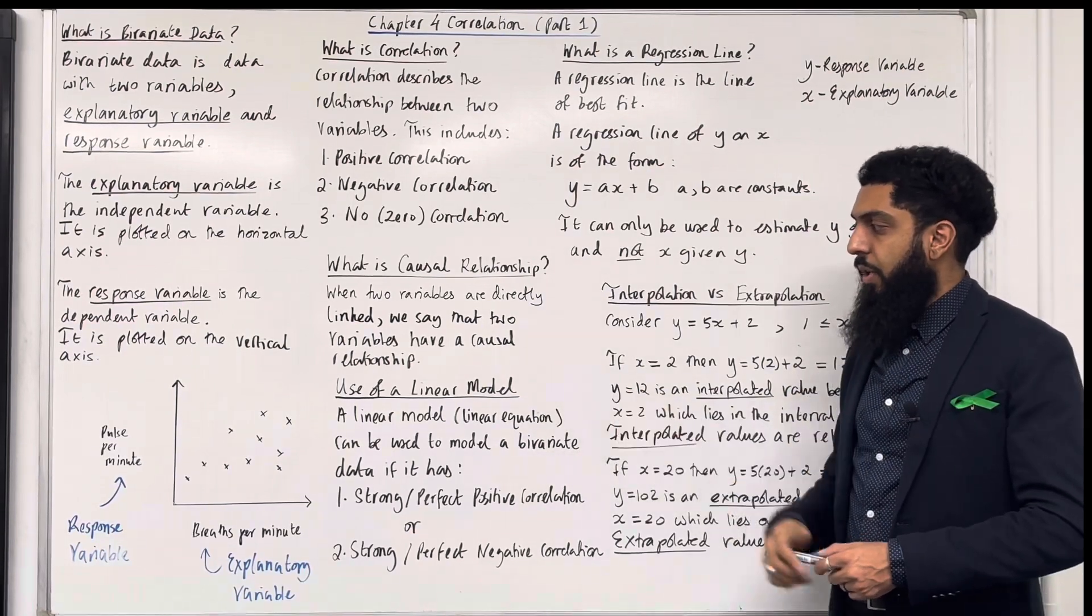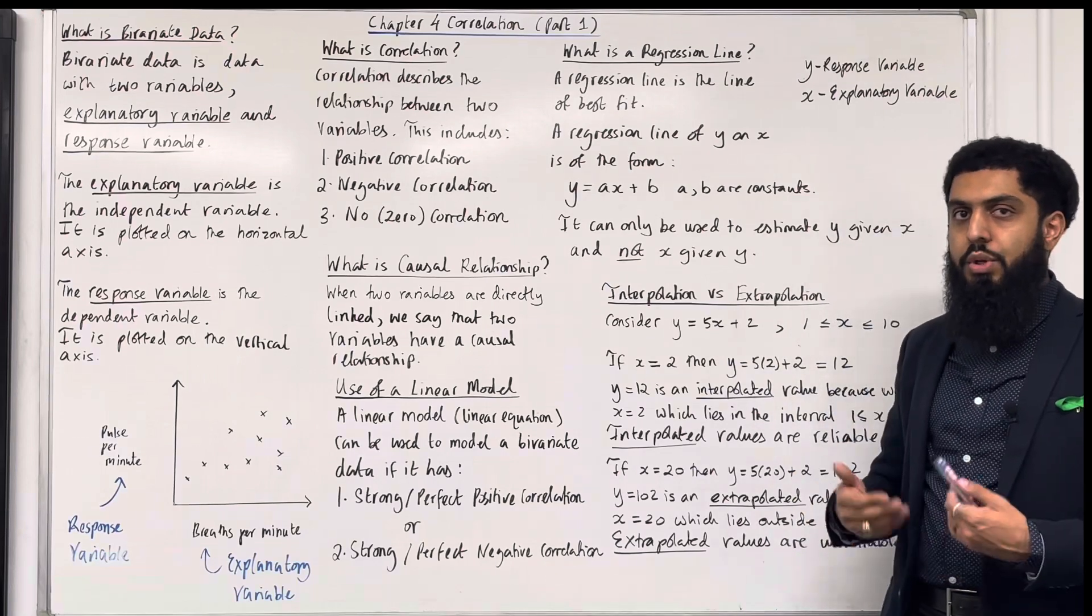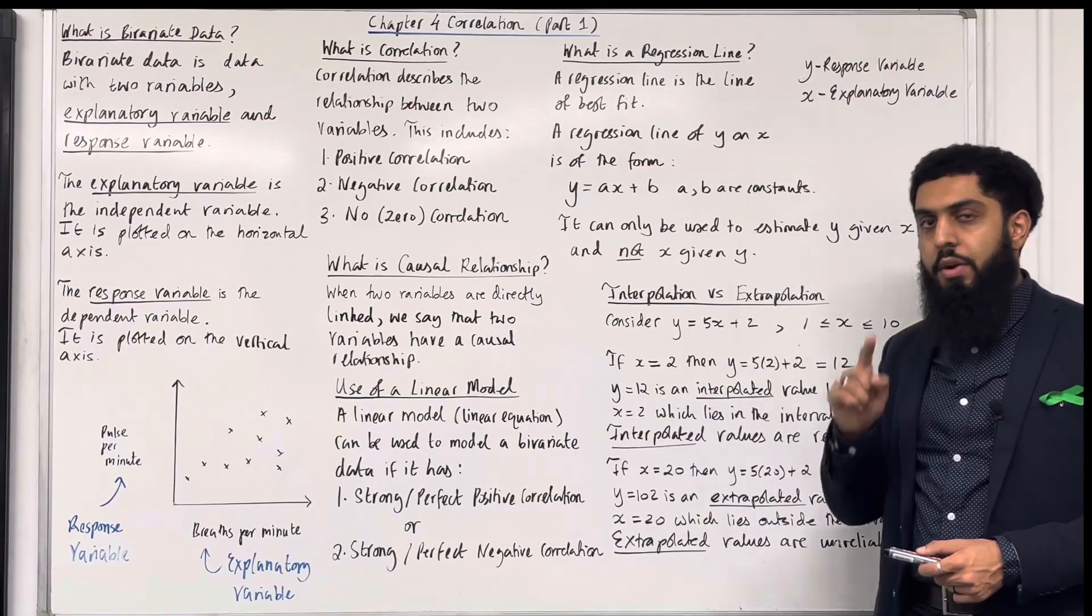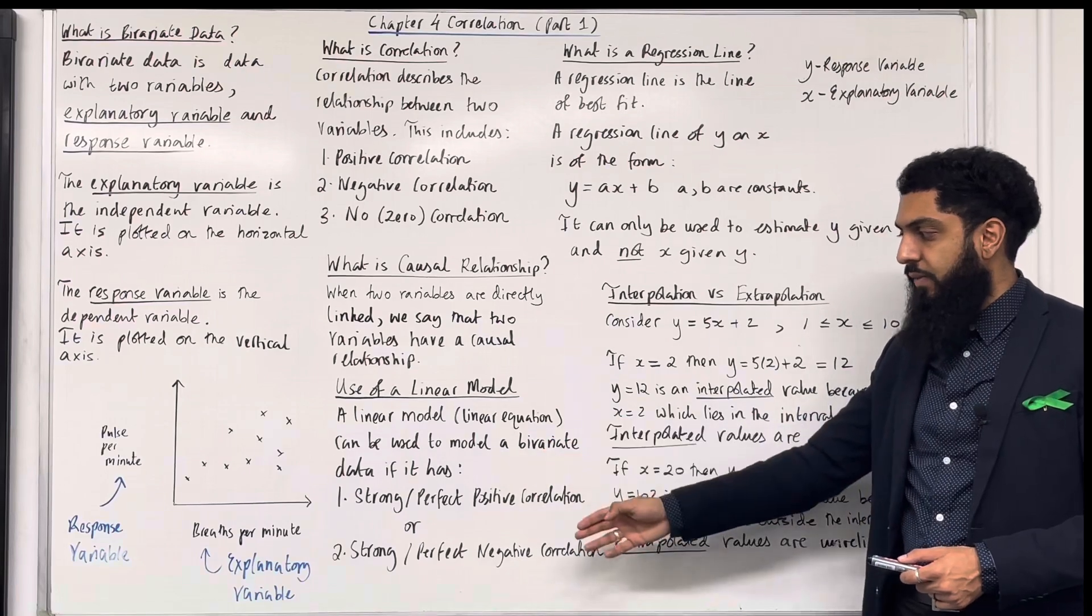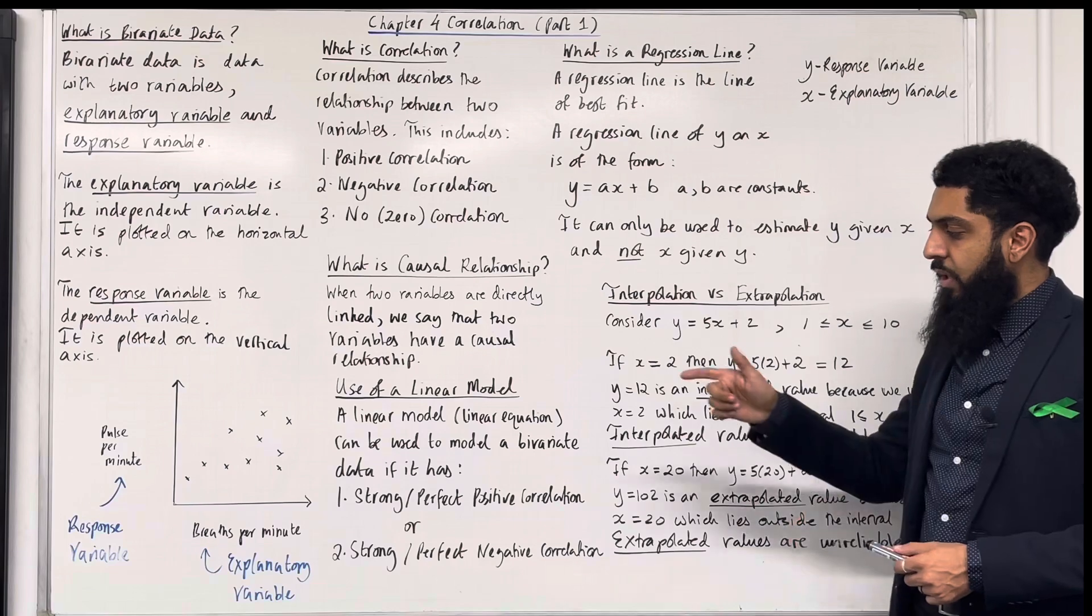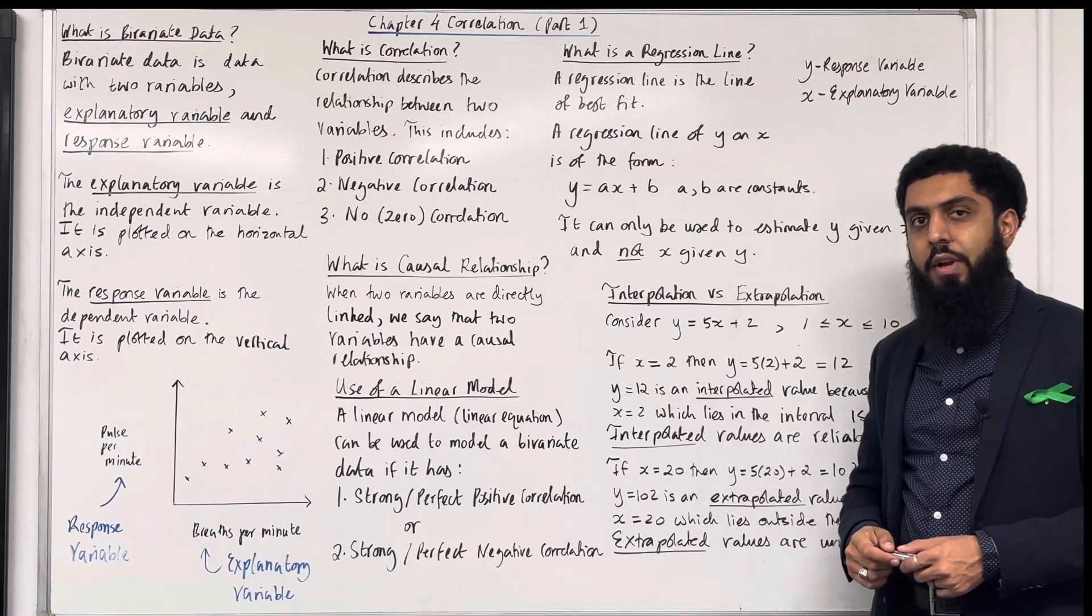Use of a linear model. A linear model, or you could call it a linear equation, can be used to model a bivariate data if one of the following two conditions are satisfied. You could have a strong, perfect, positive correlation, or you could have strong, perfect, negative correlation.